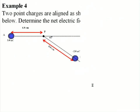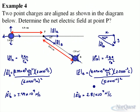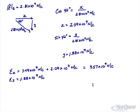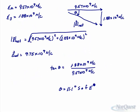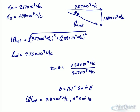Now going back to the question to make sure we have the right significant figures — we were only given two significant figures in this question. So the final answer for the net electric field is 9.8×10⁹ newtons per coulomb at 11 degrees south of east.